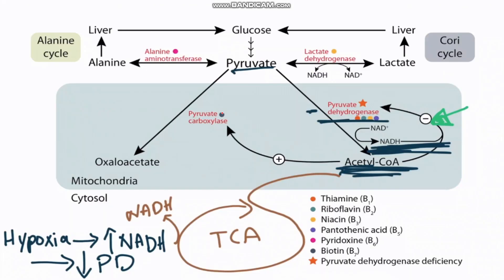Now let's talk about pyruvate metabolism regulation. Pyruvate is converted into acetyl-CoA with the help of the pyruvate dehydrogenase complex. In skeletal muscle, when acetyl-CoA and NADH accumulate, they inhibit the pyruvate dehydrogenase complex.